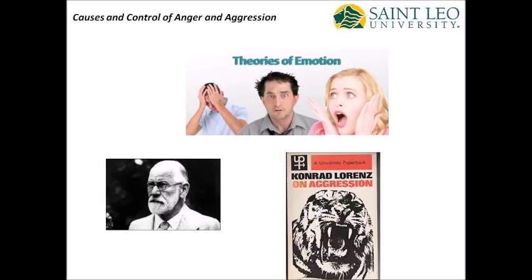Conrad Lorenz modified James' and Freud's theories further by declaring that aggression had many useful functions in animals, both within and between species, and that the aggression motive evolved to ensure survival of the species.